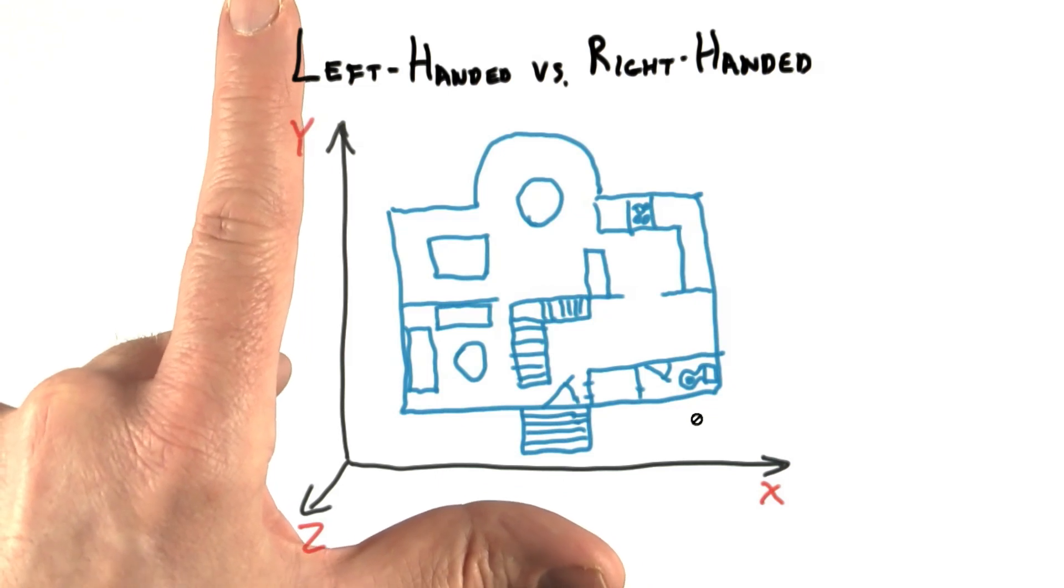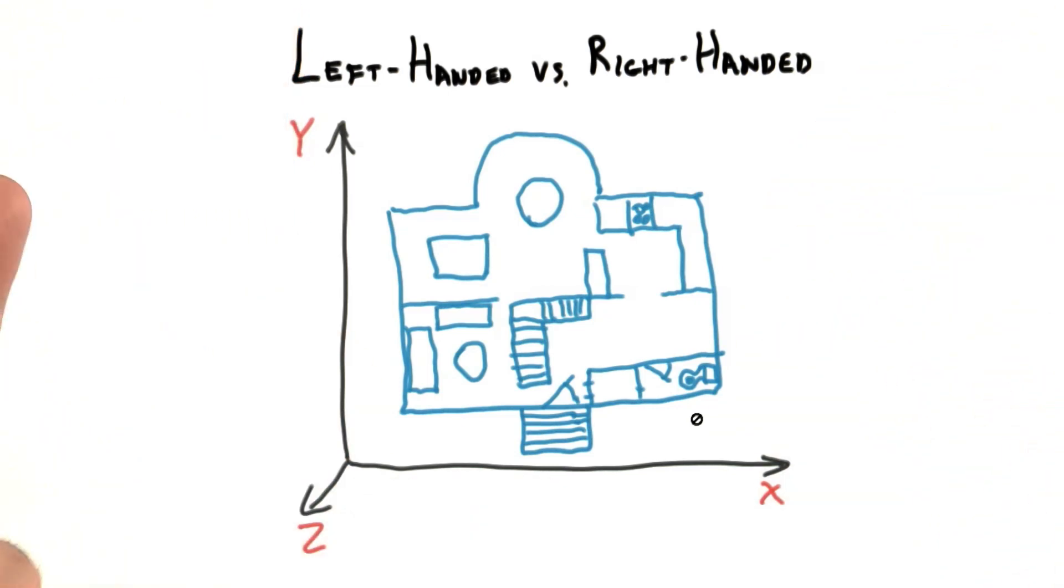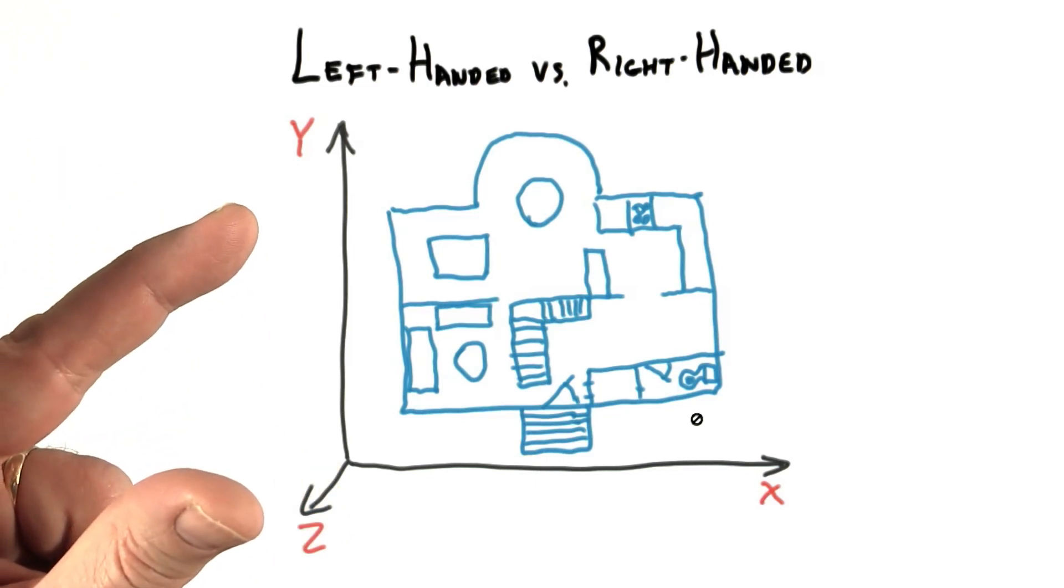This is a left-handed coordinate system. The key thing to realize is that the left-handed coordinate system is equally valid. It does not change the underlying reality of the situation.